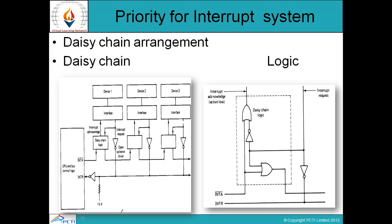Now, priority for interrupt system — this one is the DC chaining arrangement and this is its logic. Here we have CPU and bus control logic, INTR, and this is the DC chaining logic using different interfaces with device 1, device 2, device 3. The first complement of INTA-R is provided into this gate and INTR is connected with this negation gate — this is the whole combination of DC chaining logic.